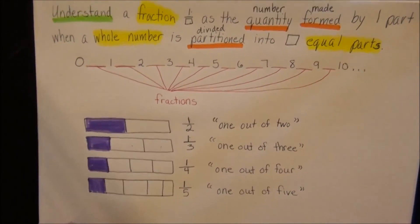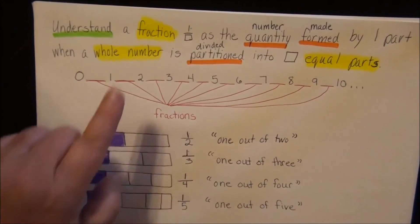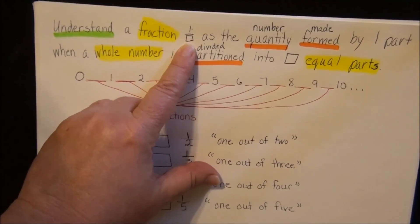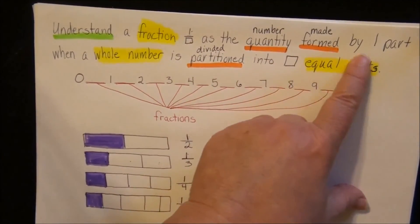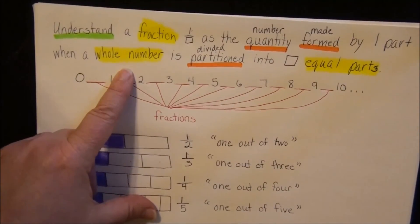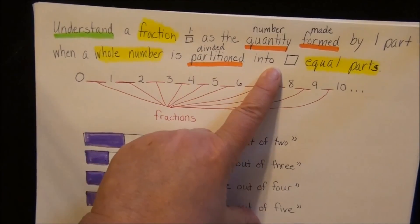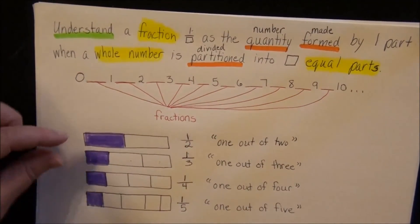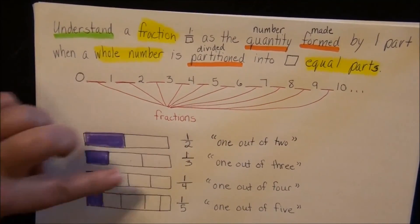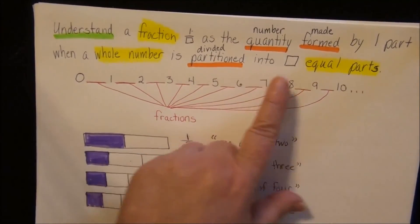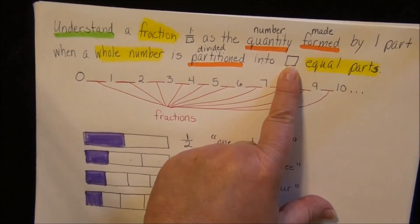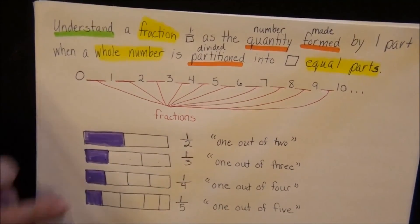And now we understand that a fraction is 1/blank as the number made by one part when a whole number is divided into blank equal parts. I divided each of these whole candy bars into equal parts. Each one is different, so that's why this is a blank. And I colored in one of each. So that is what a fraction is.